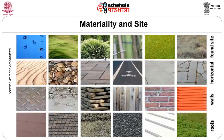If you look at the correlation between materiality and site, we have different components. We have the found site — what site we have chosen to construct our building. Then we have horizontal, which is paving devices. Then we have walls and then roofs. This is like a graph that we have formulated, and we have to see within the found site what all is there.